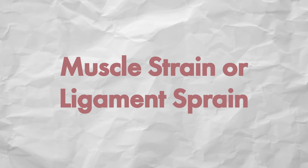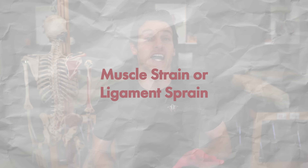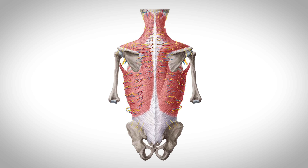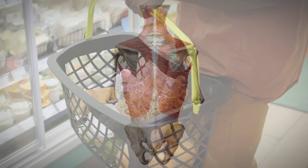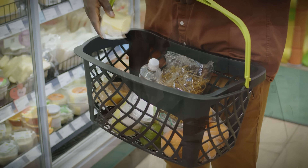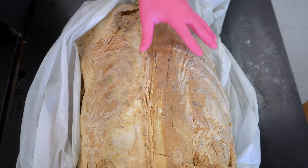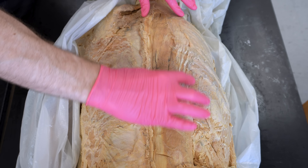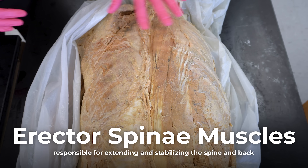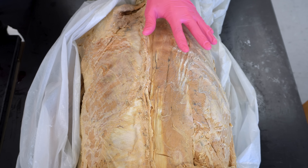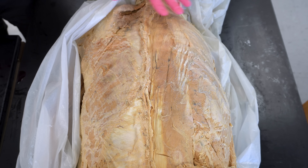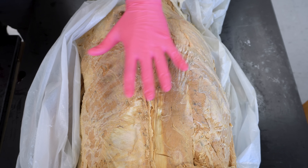The most frequent cause of back pain is a muscle strain or ligament sprain, accounting for a huge chunk of acute cases. Think a sudden onset of pain after a weekend of yard work or a bad night's sleep. This happens when the soft tissue supporting your spine gets overstretched, torn, or strained — like lifting a heavy grocery bag with a twist or slouching at your computer for hours. The muscles and ligaments can't handle the stress and start to rebel with pain. Looking at this cadaver dissection, you can again see the erector spinae muscles.